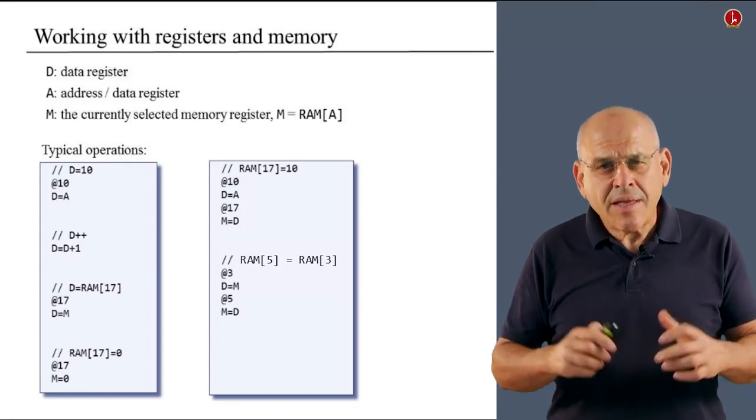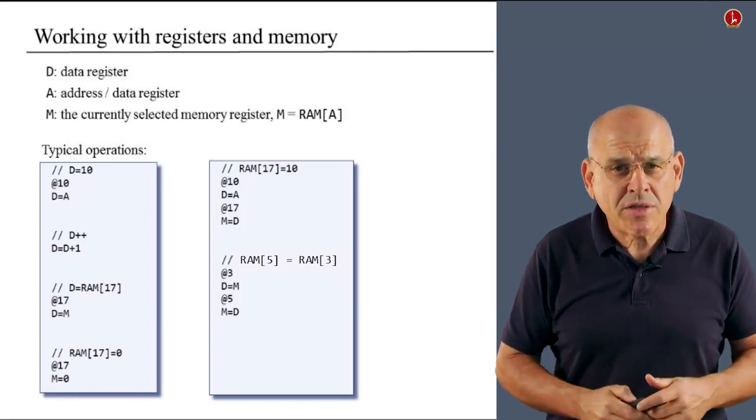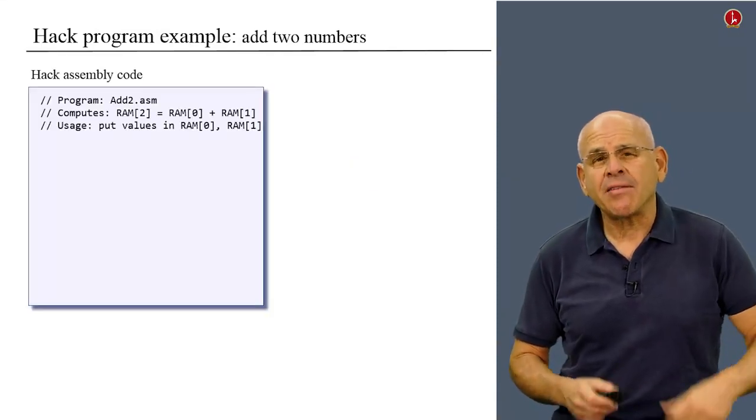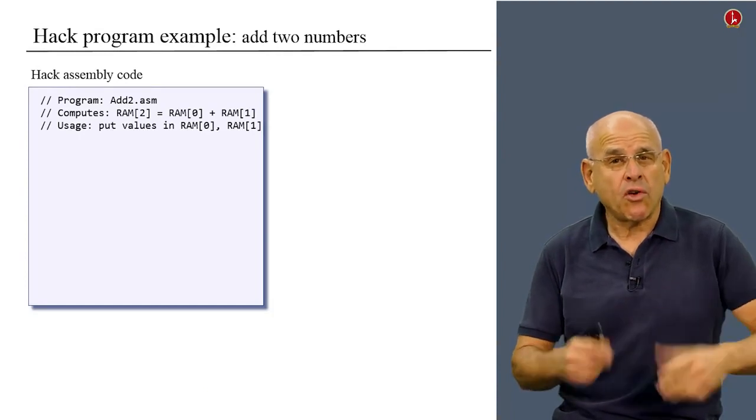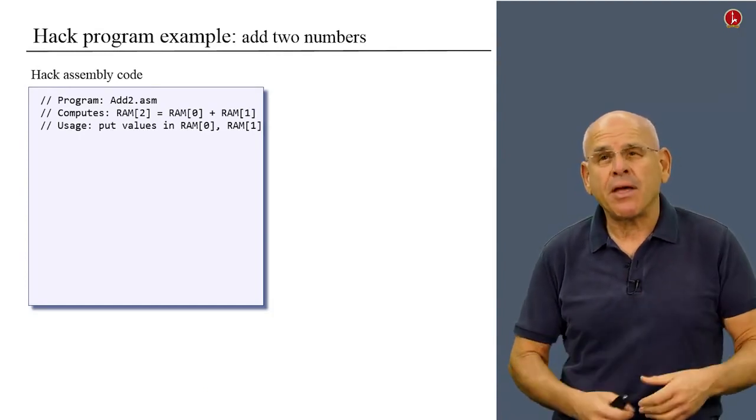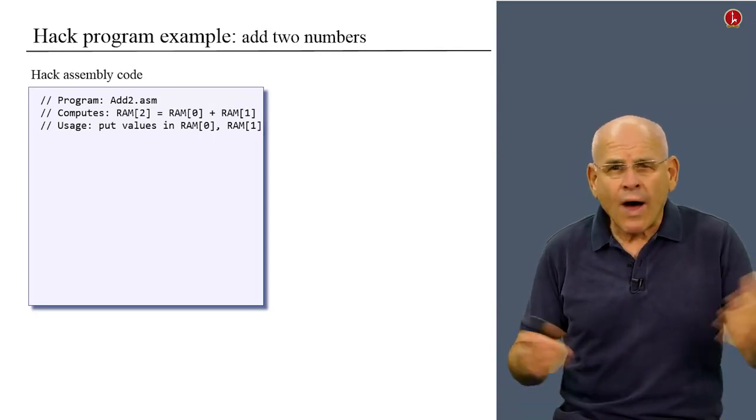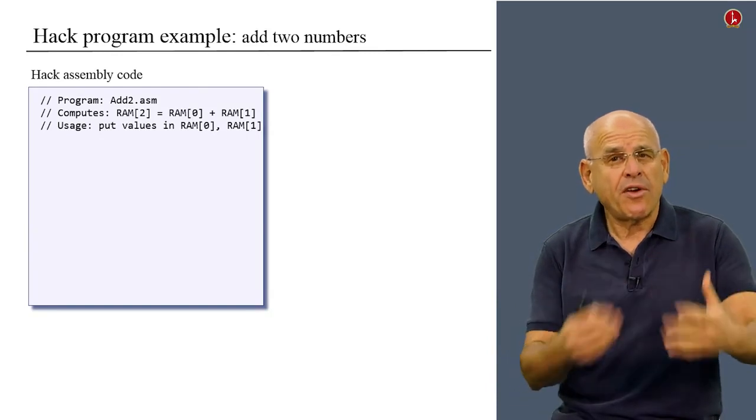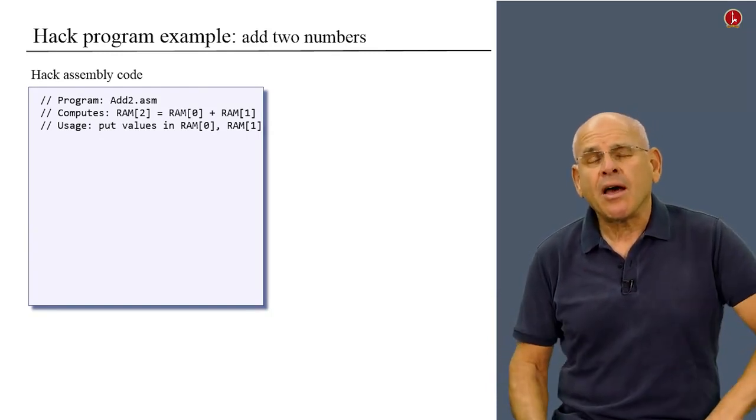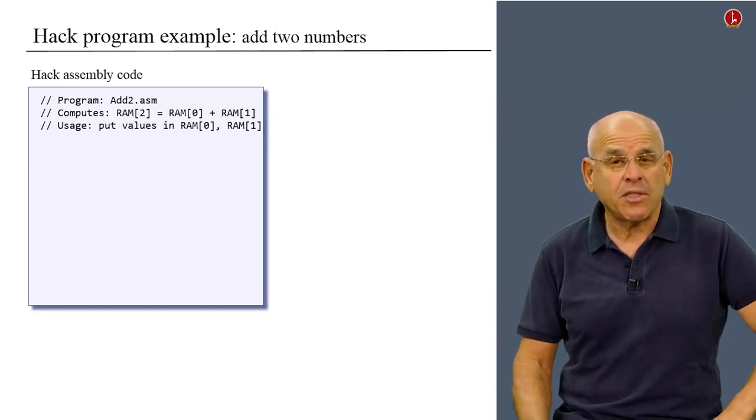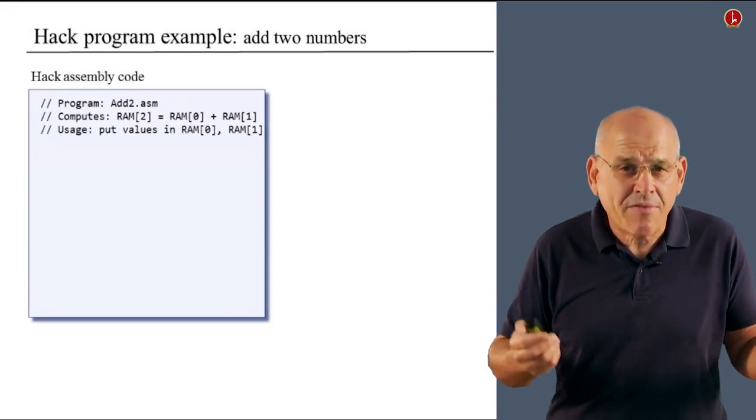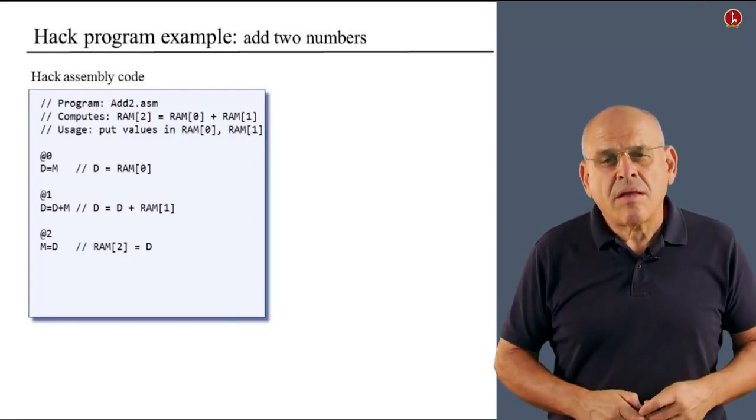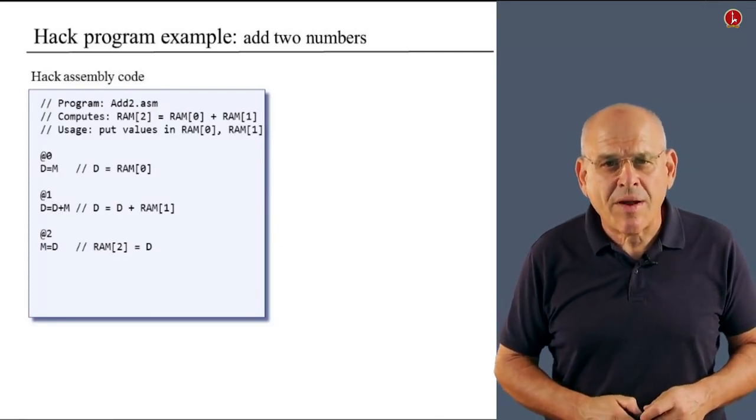What about setting RAM 3 to RAM 5? Well, once again, we can do it using similar operations. And if you want, you can stop the video, take another look at all these five code examples and convince yourself that they do what they intend to do. All right, so let us take these memory manipulation operations and register manipulations and put them in the context of an actual program. So here's a program which is designed to take two values which are stored in RAM 0 and RAM 1, add them up and save the result in RAM 2.